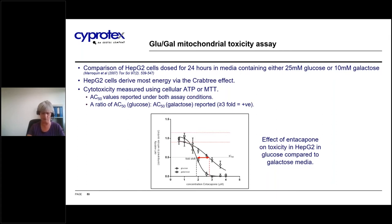In the GluGal assay, the cytotoxicity of the compound is determined under two different culture conditions: either glucose or galactose. Under standard laboratory conditions, cells are cultured in moderate to high glucose medium. When using transformed cells such as HepG2s, this encourages the cells to rely on glycolysis for their energy demand, independent of mitochondria — the Crabtree effect. By exchanging the media to one containing galactose, this forces the cells to rely on mitochondrial oxphos to supply ATP, rendering them more susceptible to mitochondrial toxicants.